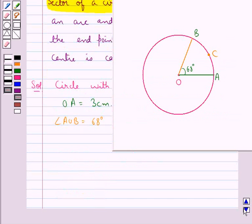Now, this sector OACB is the minor sector and take any point D on the major arc of the circle.